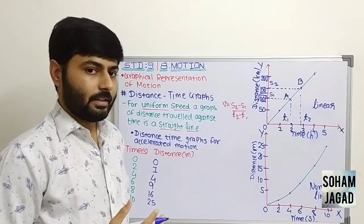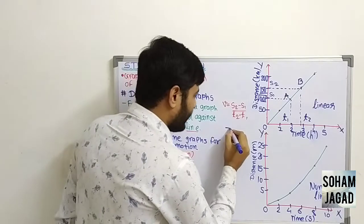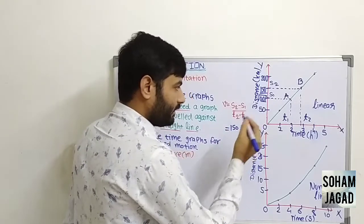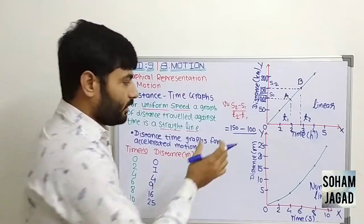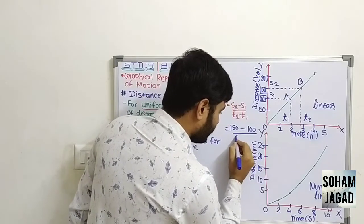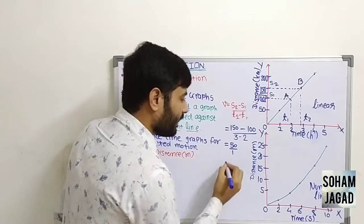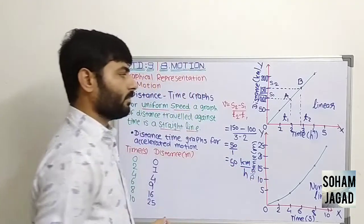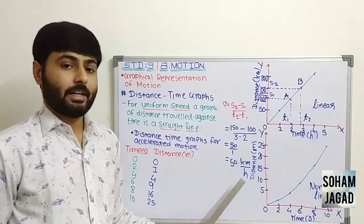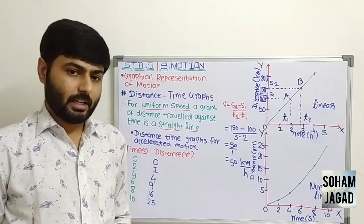To find speed, we need distance covered and time taken. Distance covered is S2 minus S1, that is 150 km minus 100 km equals 50 km. Time taken is T2 minus T1, that is 3 minus 2 equals 1 hour. So speed is 50 divided by 1, which is 50 km per hour. From this graph, the object travels at 50 km per hour, which we can convert to m per second as seen in the previous lecture.